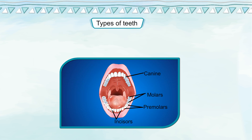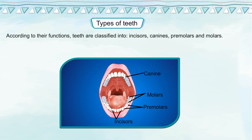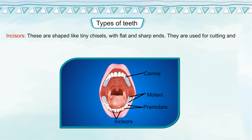According to their functions, teeth are classified into incisors, canines, premolars, and molars. Incisors are shaped like tiny chisels with flat and sharp ends. They are used for cutting and chopping food. We have 8 incisors in all, with 4 in each jaw.